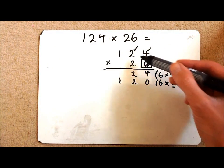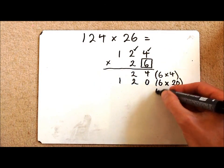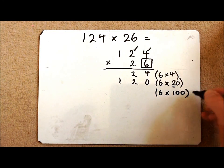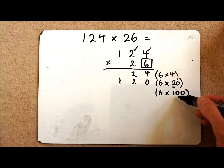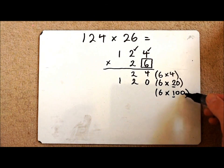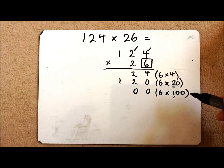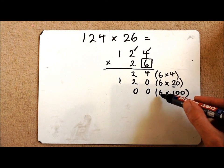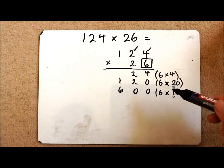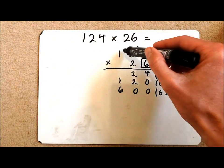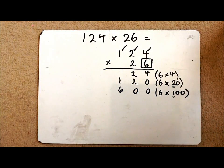I've then got to multiply my 6 by the 100. So this time I've got next to the one two zeros. So I've got to make sure that my answer is 100 times bigger. And then I just have to do 6 times 1 which is 6. Right so I've now multiplied 124 by 6.